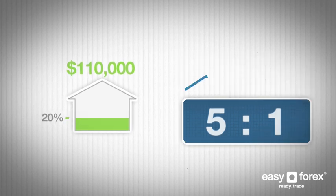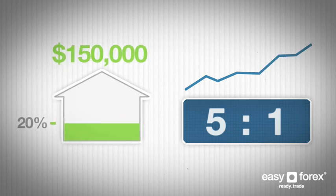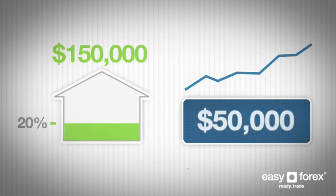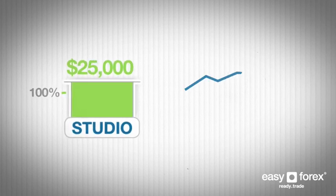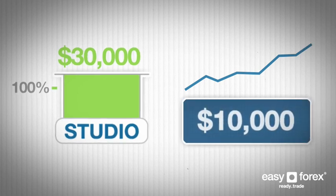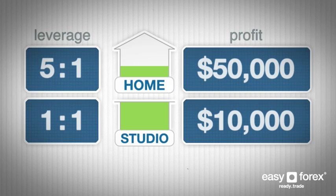One year later, the property market has appreciated by 50% and you decide to sell the property for $150,000, making a $50,000 profit. If you had not taken out a bank loan and had used only your $20,000 to buy a small studio which cost that amount, your total profit after a 50% property price increase would have been only $10,000. Your 5 to 1 leverage has allowed you to earn 5 times more than you would have if you had traded without leverage.